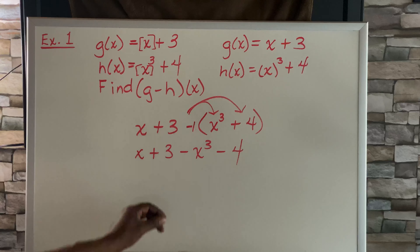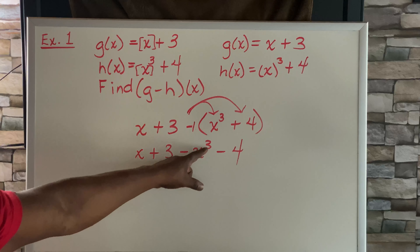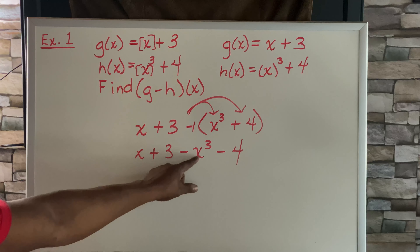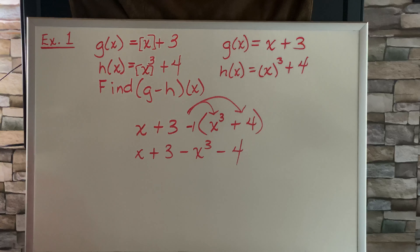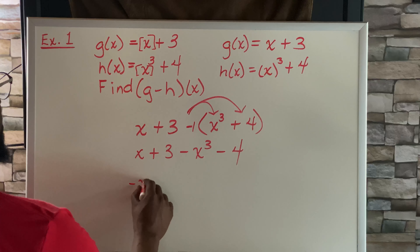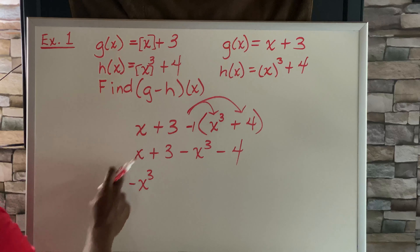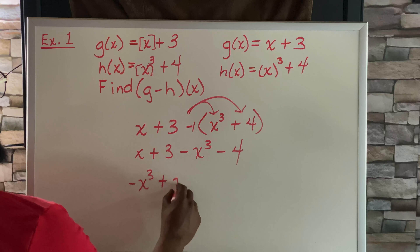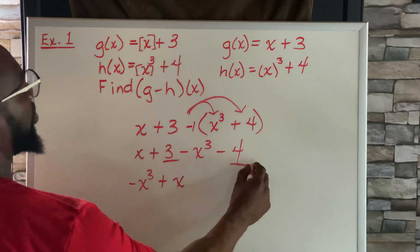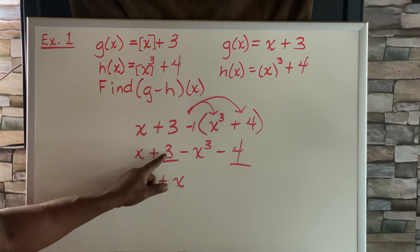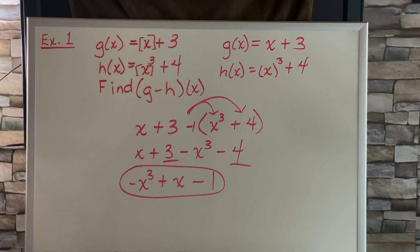Now if we're writing this polynomial in standard form, we combine our like terms. The minus x cubed goes first: negative x cubed, then plus x, and positive 3 and negative 4 gives minus 1. So your answer is negative x cubed plus x minus 1.